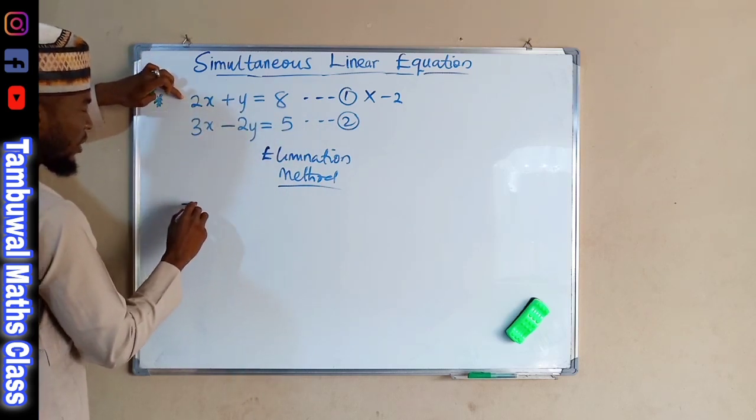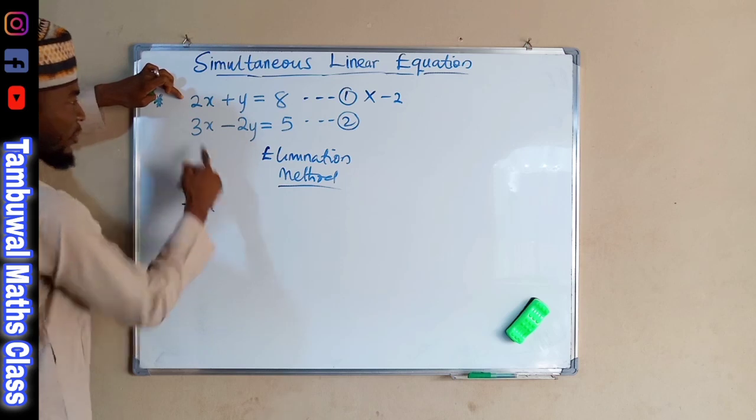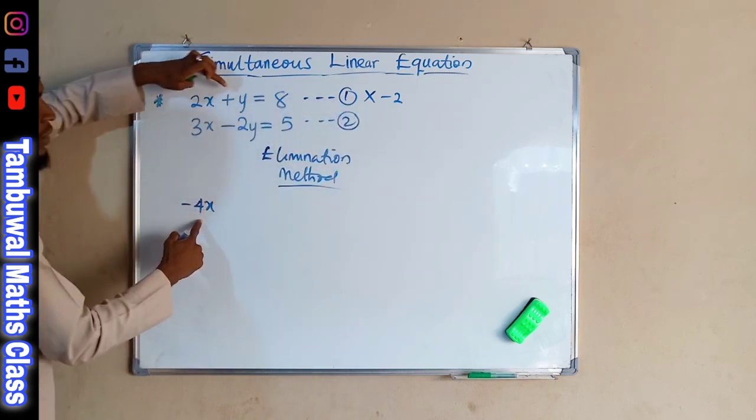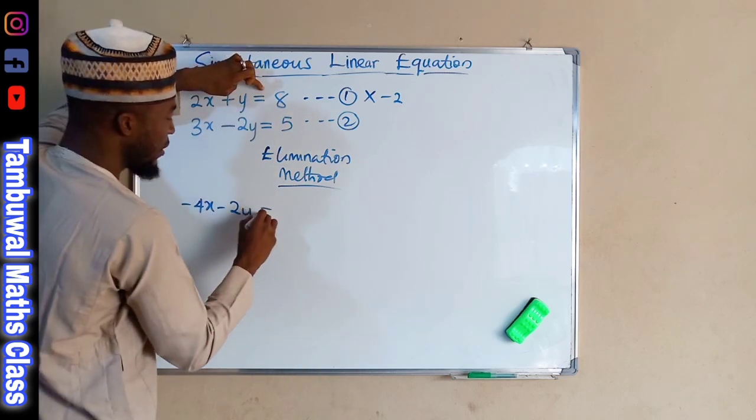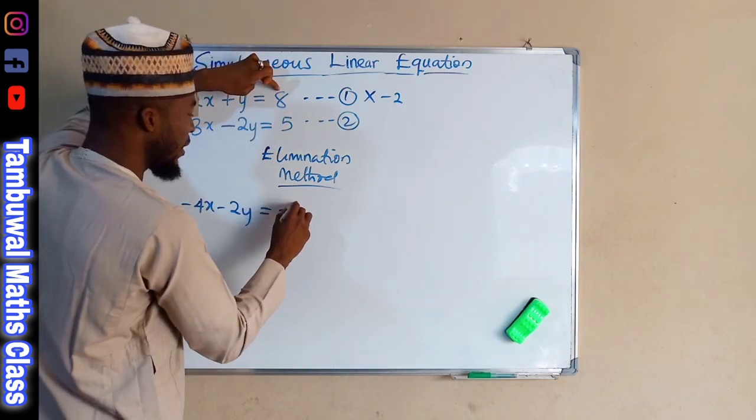So, multiplying this whole equation by negative 2, it will transform it into negative 4X, because 2 times negative 2 is negative 4X. Then Y times negative 2 is negative 2Y.